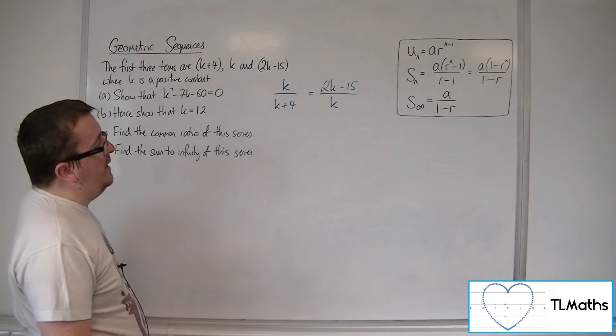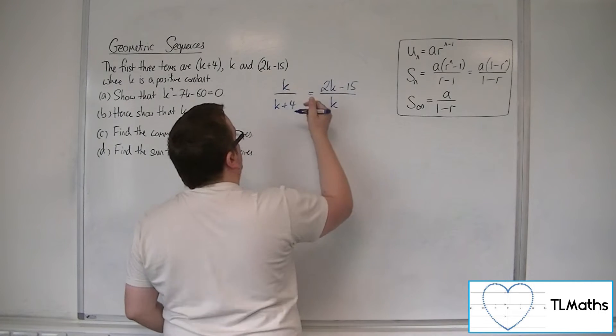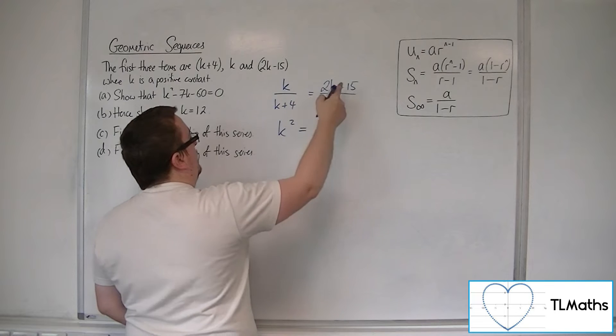So this gives us an equation that we can rearrange. Because if I multiply both sides by the k, we're going to get k squared. And then if I multiply both sides by the k plus 4,